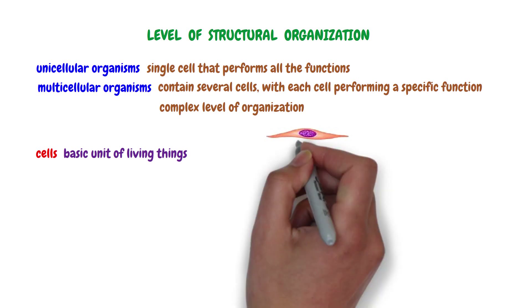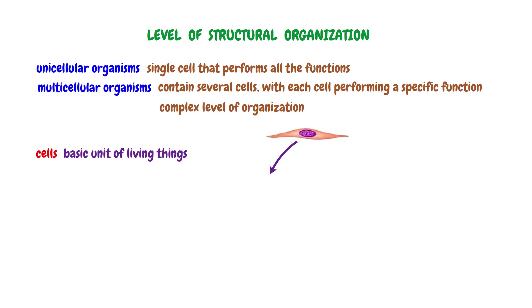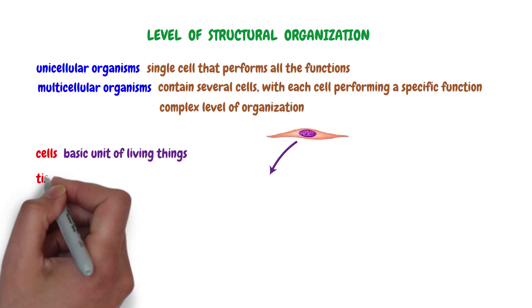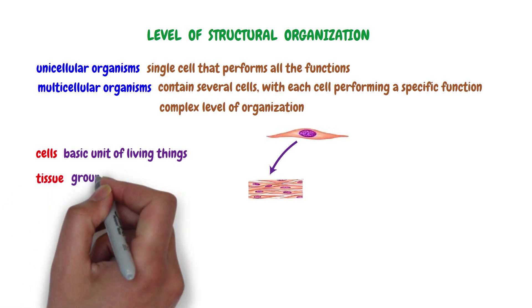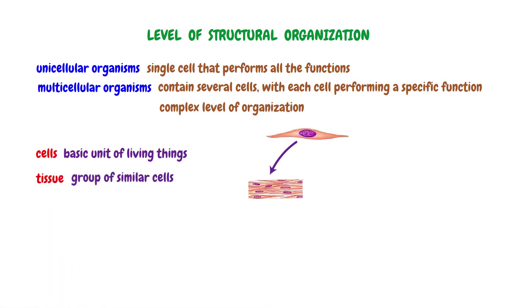The second level of complexity is the tissue. A tissue is a group of similar cells performing a common function. There are four types of tissues: muscle tissue, connective tissue, nervous tissue, and epithelial tissue.